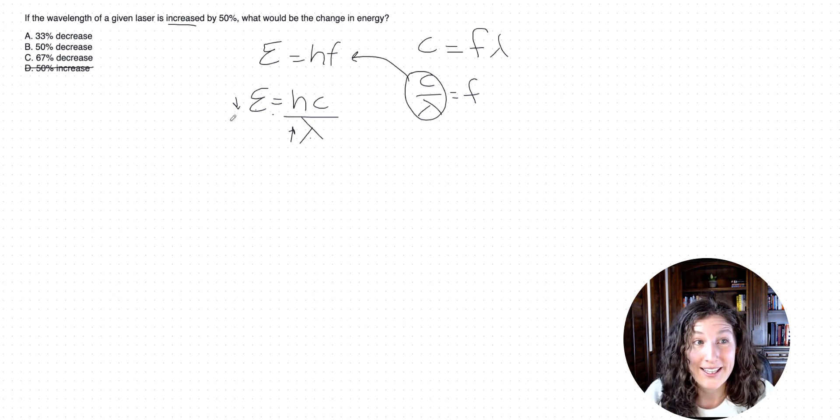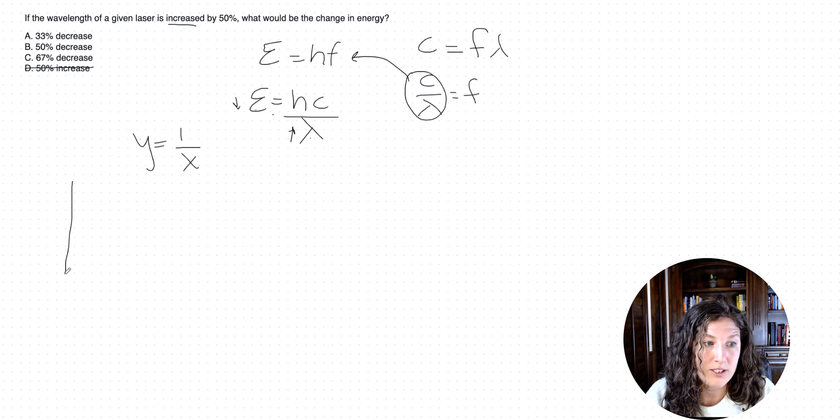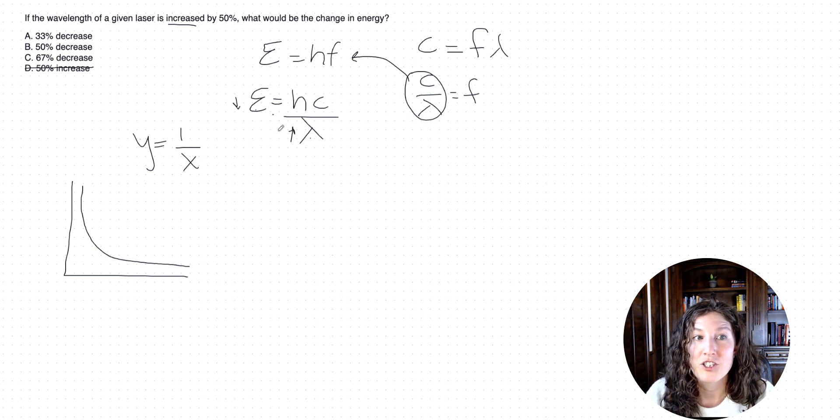Sometimes that can get you all the way to the answer. But now we have to recognize, and this is important, important, important, a reciprocal relationship where it says Y equals 1 over X. This kind of relationship is not a linear one, alright? If we were to put this on a graph, the graph would kind of look like this. It's not going to look linear, which means that we can't just do a linear change. If we're increasing by 50, we decrease by 50 for energy. So I'm going to tell you that B is also incorrect, but now we're going to walk through why.